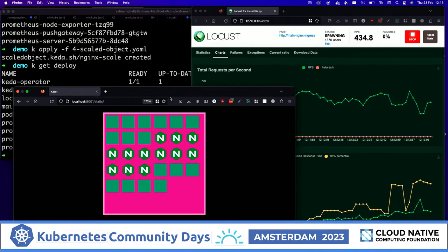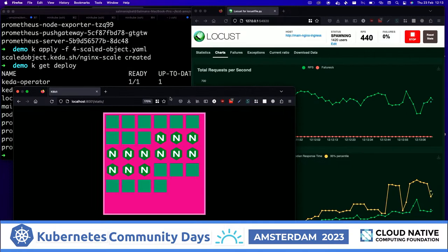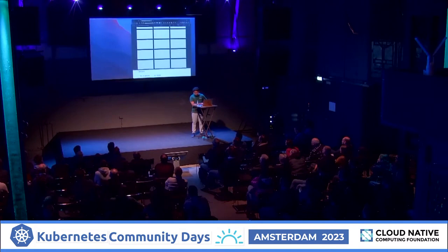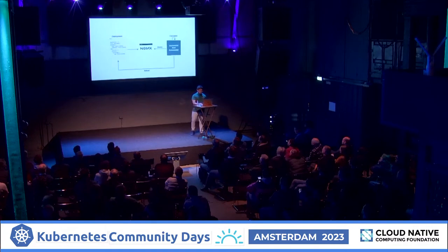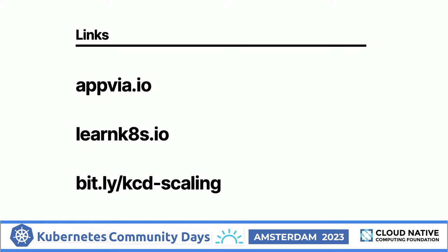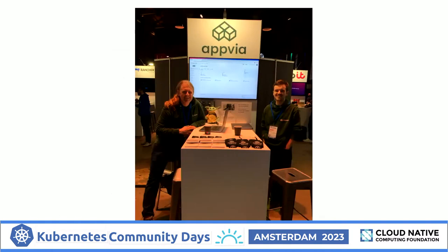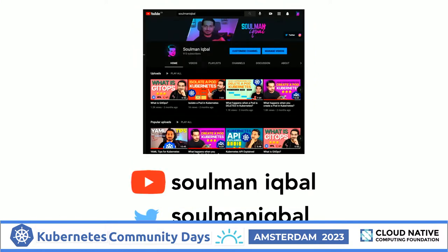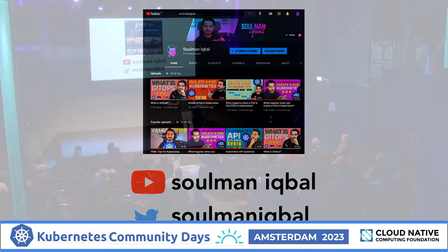As you can see on the dashboard now, the total number of requests are going down because we scaled up based on the event. And if I keep this running, once all the traffic is served it will scale back down — that's the scaled object. You can do this not only for ingress but for any workload you might need. Check out the blog at bit.ly/KCDscaling, learnkates.io for Kubernetes blogs and training, and appgear.io. My name is Salman Iqbal — find me on Twitter or YouTube. Thank you so much, have a great day and a great conference.